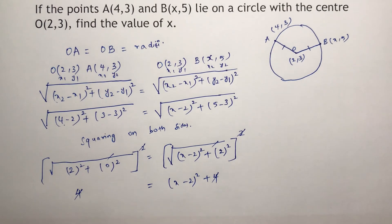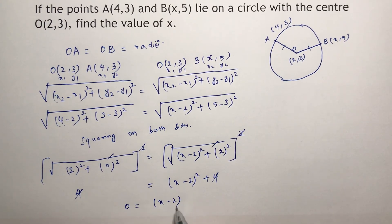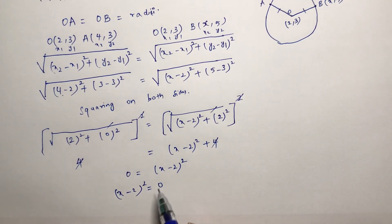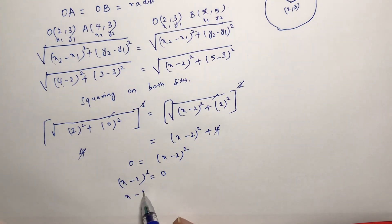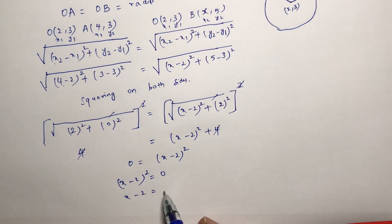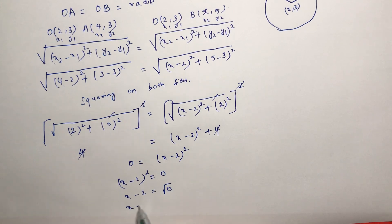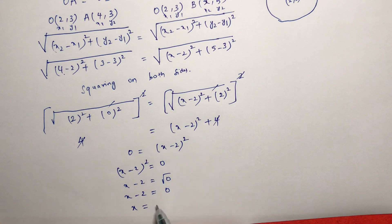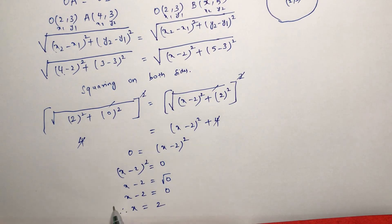4 and 4 cancel, so 0 equals (x minus 2) whole square. Therefore (x minus 2) whole square equals 0, which gives x minus 2 equals 0. Therefore the value of x is 2.